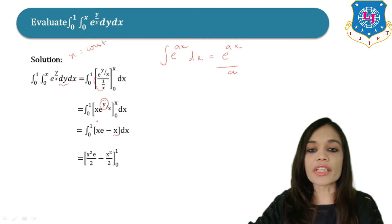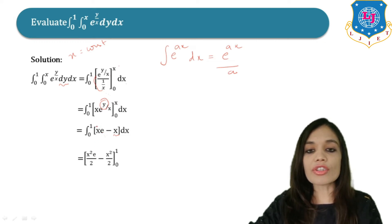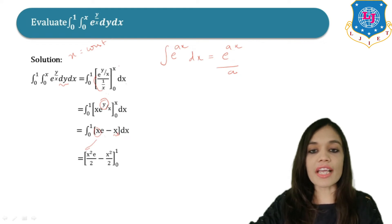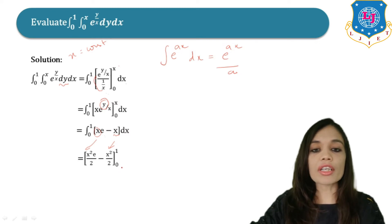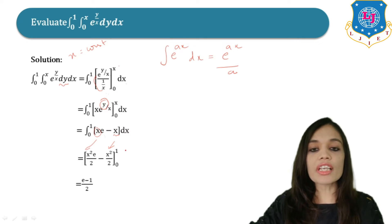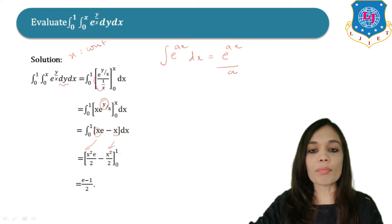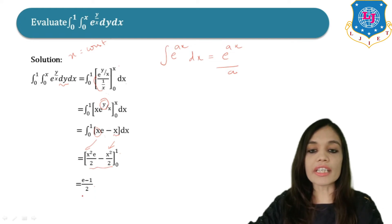Now let us evaluate this with respect to x. e is constant, and the integration of x is x²/2. The integration of the remaining x is also x²/2, with limits 0 to 1. Putting x = 1, we get (e − 1)/2. Putting x = 0, the whole term goes to 0. So the final answer of the integral is (e − 1)/2.